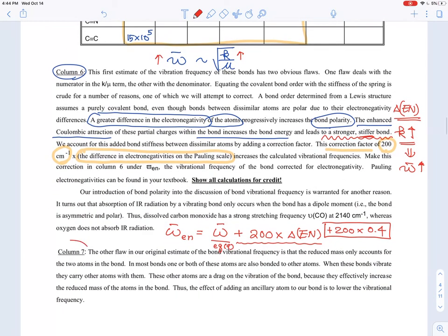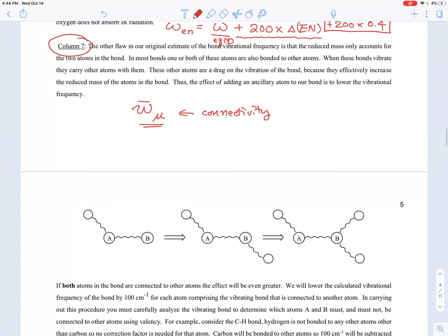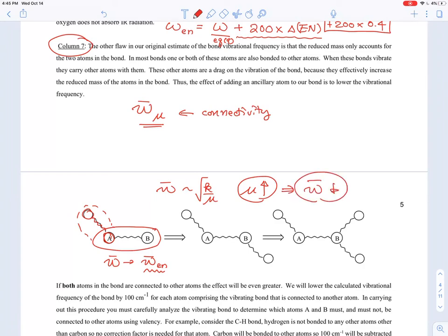The last one is column seven, and this one is correction for effective mass due to the connectivity. Originally it was like that, but after electronegativity correction, this is the new numbers. Without any connection, that would be good enough correction, but now this atom is connected by some other atoms, and the effective mass is going to be increased a little bit. The wave number is proportional to K over mu, and if the effective mass is going up, that means your wave number should go down.